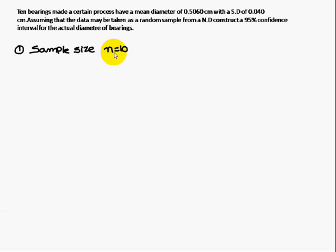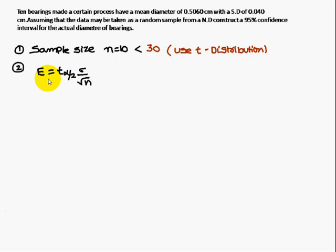Sample size is 10, this is less than 30, so you always have to use the t-distribution. Here E is equal to t α/2 times σ by root n formula, therefore t α/2 value...